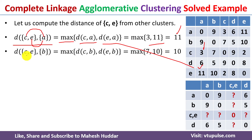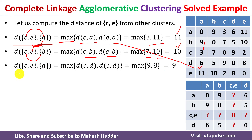Similarly, we calculate the distance from CE to B: the maximum distance between C-B and E-B. The distance between C and B is 7, and the distance between E and B is 10, so the maximum is 10. Similarly, the distance between cluster CE and D is equivalent to 9. So the distance from CE to A is 11, CE to B is 10, and CE to D is 9. After updating the weights, the distance matrix is updated accordingly.